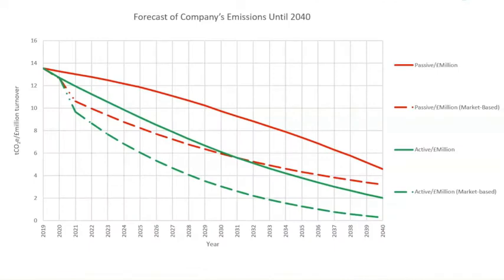This graph shows the forecast of a company's emissions until 2040. A couple of different scenarios have been taken into account: one where the company does nothing, and another where the company actively tries to reduce its emissions.